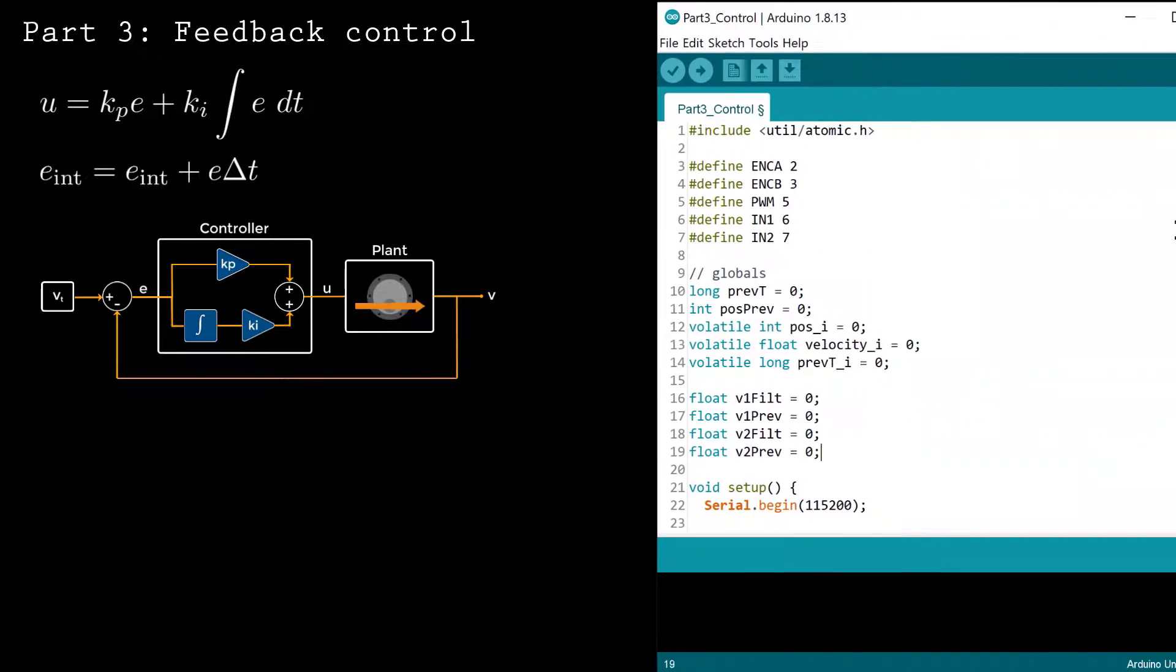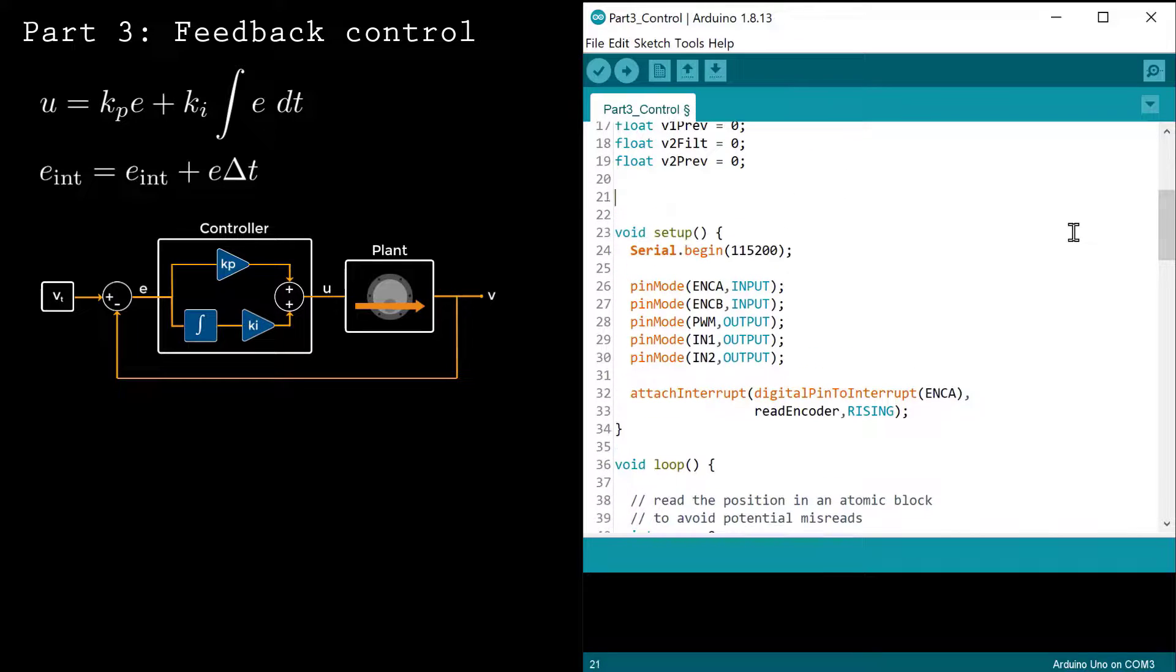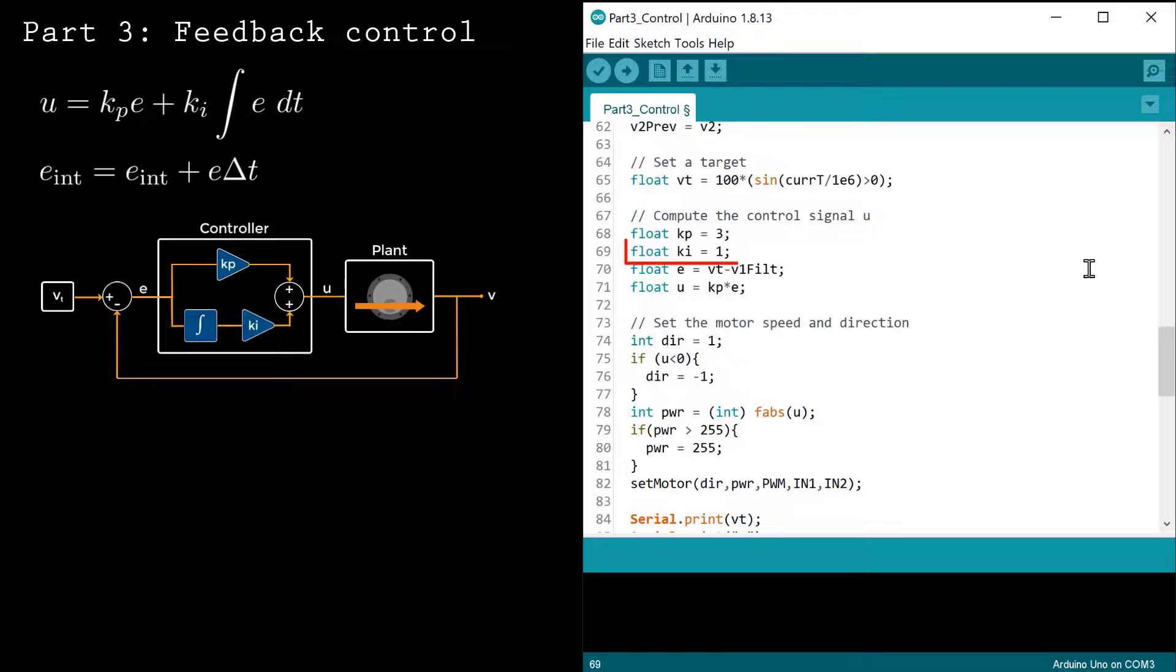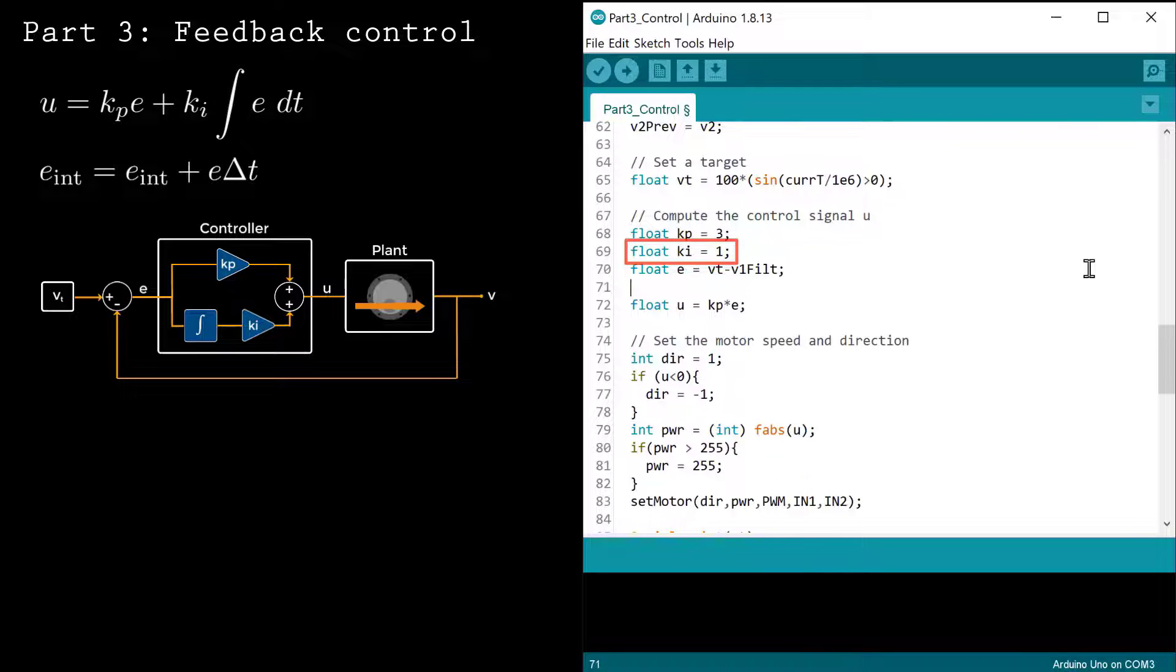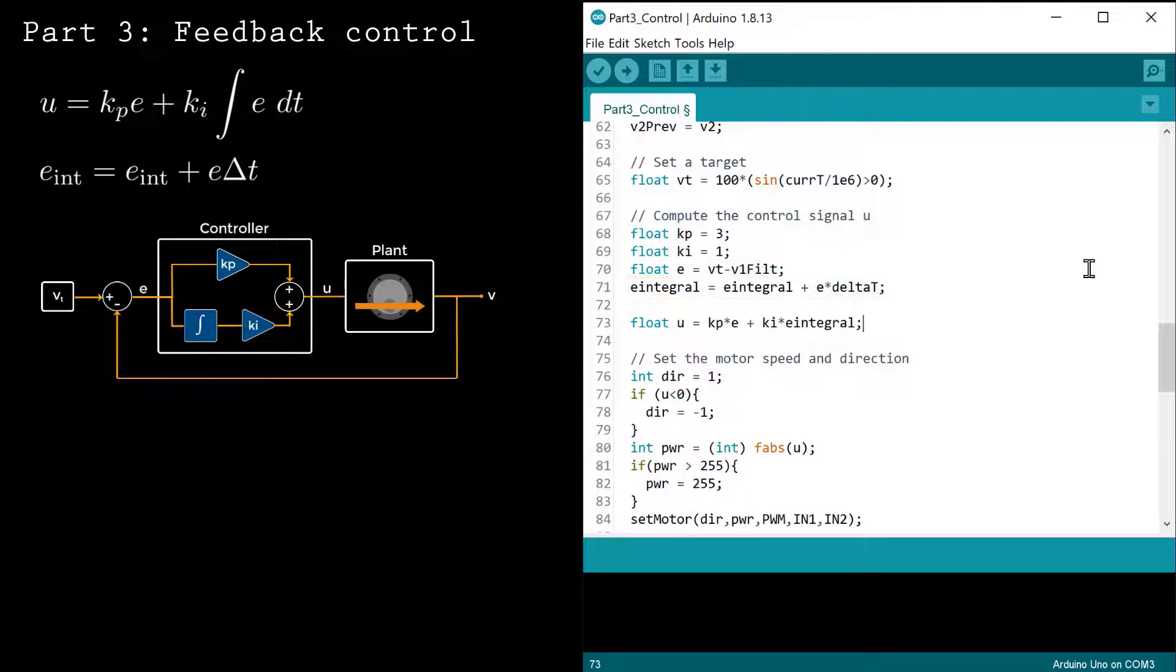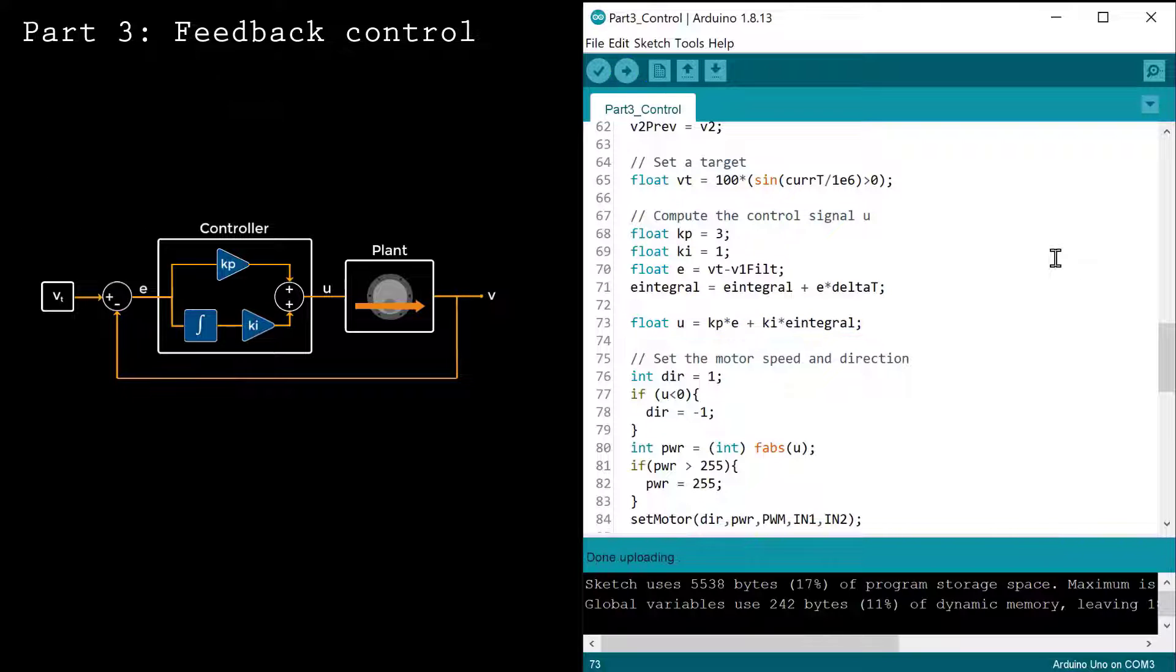Let's implement the integral term on the Arduino. Define a global variable for the integral. Next, define Ki, the integral term coefficient. Update the integral inside the loop function using the difference equation. To complete the PI controller, add the integral term into the expression for the control signal u.